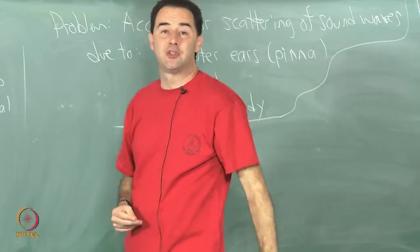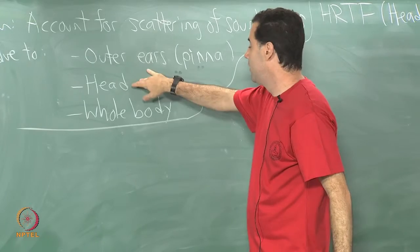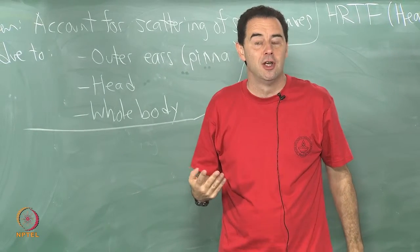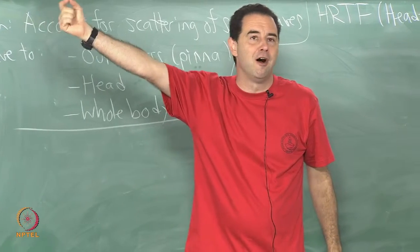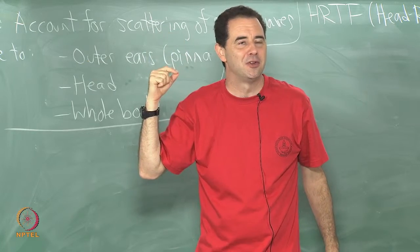This is the extra amount of information, the scattering that is due to your outer ear, the pinna, the head and your whole body. This is the extra information that we use in order to resolve the source of sound inside of this cone of confusion that I talked about last time.